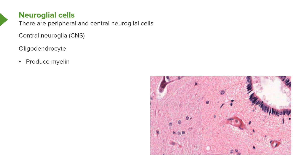Let's look at these neuroglial cells in more detail. There are peripheral and central neuroglial cells. The peripheral ones — remember — are the Schwann cells and the satellite cells. One of the most important central neuroglial cells is the oligodendrocyte. It produces the myelin, so it's equivalent to the Schwann cell in the central nervous system.